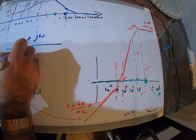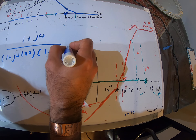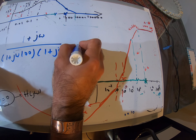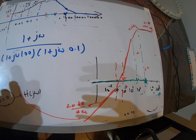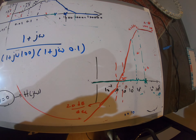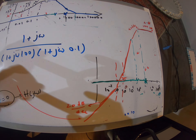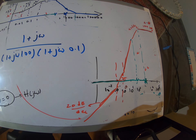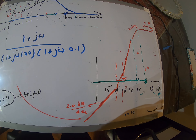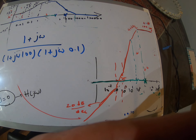What you should be expecting in the course final exam would be something like: (1 + jω/100) times (1 + jω/0.1) — not more than three poles and zeros. That's what I wanted to show you, and I hope this Bode plot example was clear. Good luck, all the best!